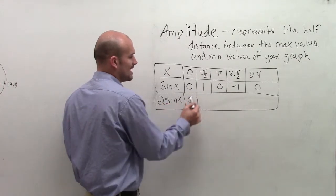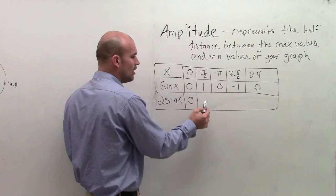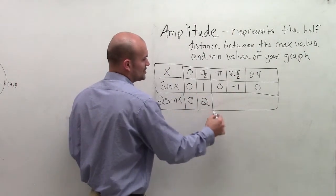However, sine of pi over 2 would give me 1, then multiply that by 2, and now I'm up to 2.